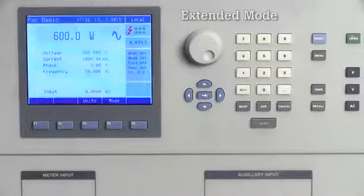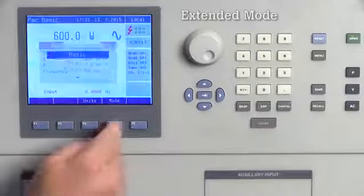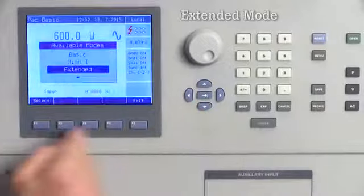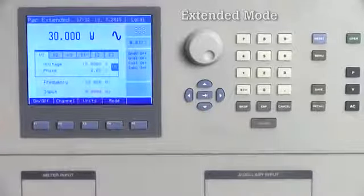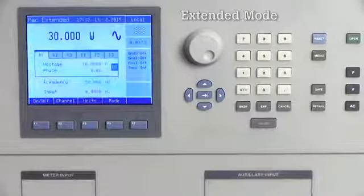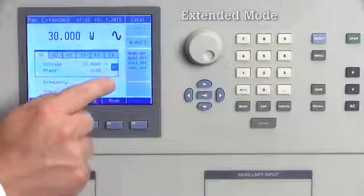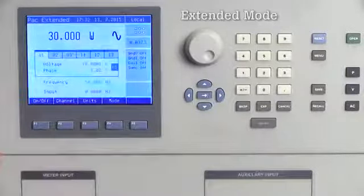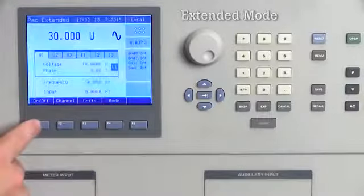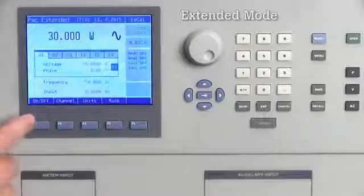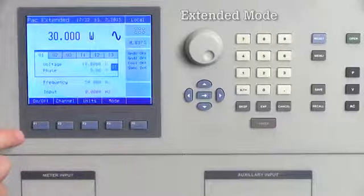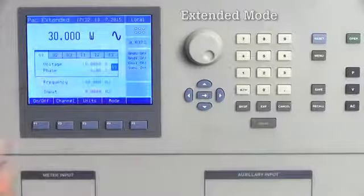For example, if you select the extended mode, you will be shown a menu that shows six channels, three voltage and three current. From here, you can toggle channels on and off with a push of a key. You can also change the values for each channel without affecting the others.